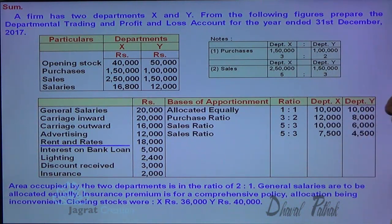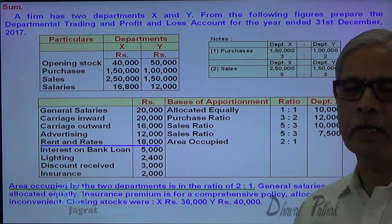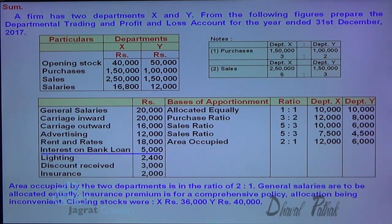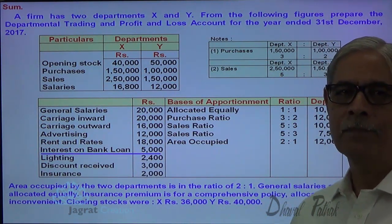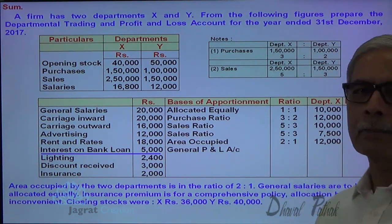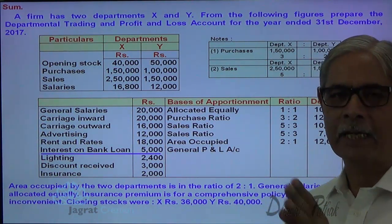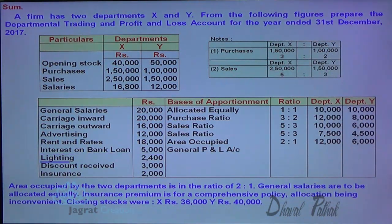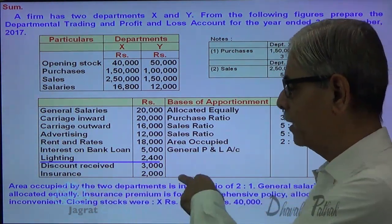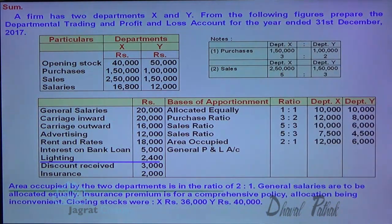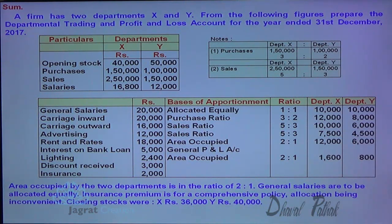Rates and taxes are distributed in the proportion of area occupied: 18,000 in ratio 2:1 gives 12,000 and 6,000. Interest on bank loan is difficult to allocate, so it is debited to the general profit and loss account and not apportioned. Lighting: since you light the area, it is distributed in the proportion of area occupied in ratio 2:1, giving 1,600 and 800.